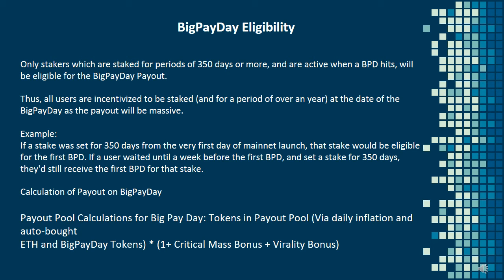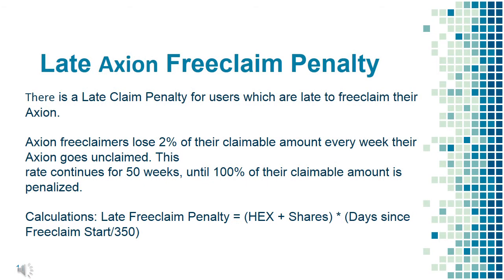Calculation of payout on Big Payday: Payout pool calculations include tokens in the payout pool via daily inflation and auto-bought ETH, and Big Payday tokens — multiplied by (1 + critical mass bonus + virality bonus). Late Axion Free Claim Penalty: Axion free claimers lose 2% of their claimable amount every week their Axion goes unclaimed. This continues for 50 weeks until 100% of their claimable amount is penalized. The formula is: Late Free Claim Penalty = (HEX shares) × (days since free claim start / 350).